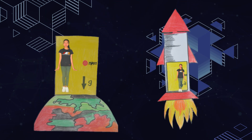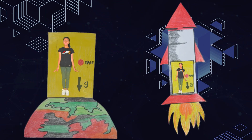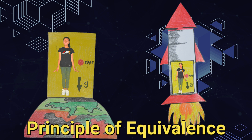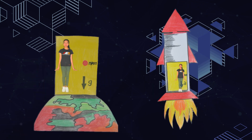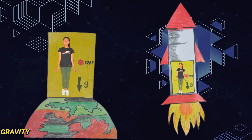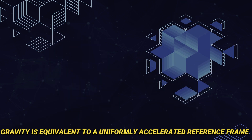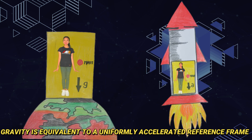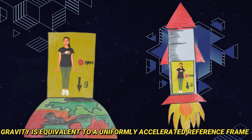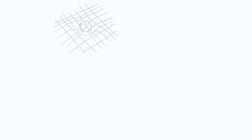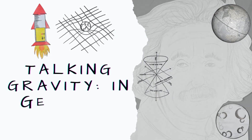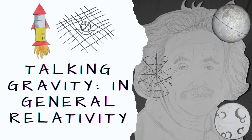This idea became Einstein's Principle of Equivalence, which states that gravity is equivalent to a uniformly accelerated reference frame, and served as the backbone of his General Theory of Relativity.